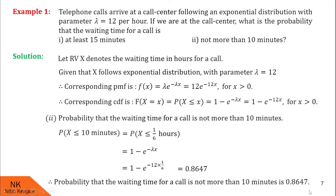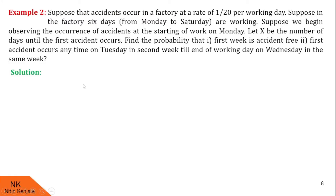Now let us proceed to the next example. Here we are given that accidents occur in a factory at a rate of 1/20 per working day — this is the value of lambda. The factory works 6 days from Monday to Saturday. We begin observing the occurrence of accidents at the start of work on Monday. Let x be the number of days until the first accident occurs. We are asked to find: (1) the probability that the first week is accident free, and (2) the probability that the first accident occurs anytime on Tuesday in the second week till the end of the working day on Wednesday in the same week.